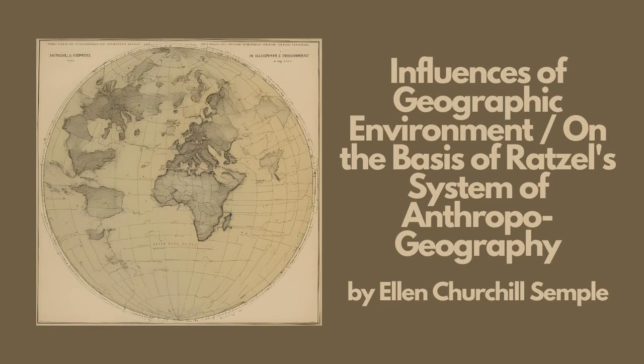To quote Darwin: in one sense the conditions of life may be said, not only to cause variability, either directly or indirectly, but likewise to include natural selection, for the conditions determine whether this or that variety shall survive. The variability of man does not mean that every external influence leaves its mark upon him, but that man as an organism, by the preservation of beneficent variations and the elimination of deleterious ones, is gradually adapted to his environment.